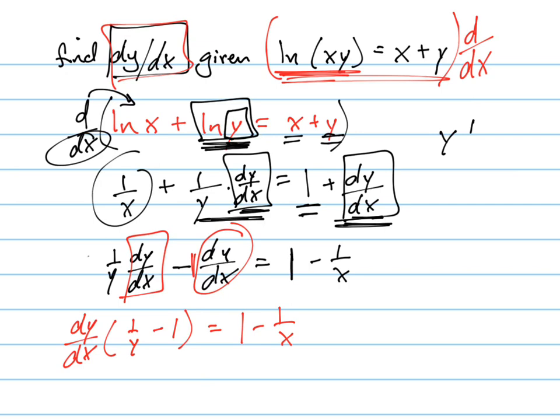And now just multiply by the reciprocal of this thing to get dy/dx by itself. So dy/dx equals. Now, there's a couple things you can do here. You might want to get common denominators before you do anything else, or you can simplify it after the fact. It really doesn't matter, so I'll do it this way. I'll do it like this, 1 over y minus 1. See how I divide it by that? Yeah.